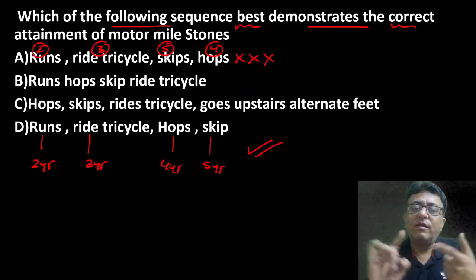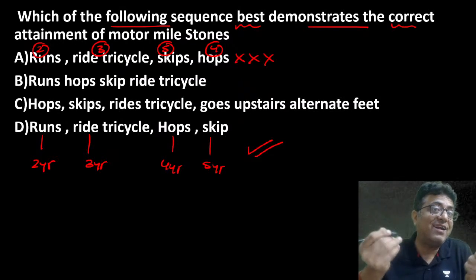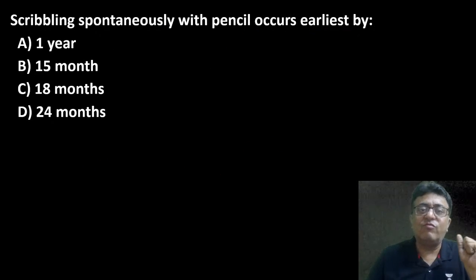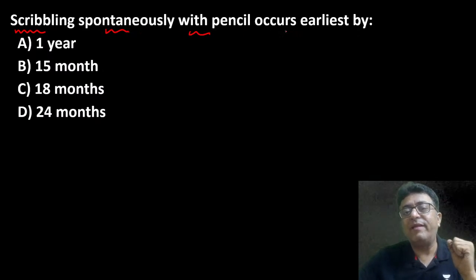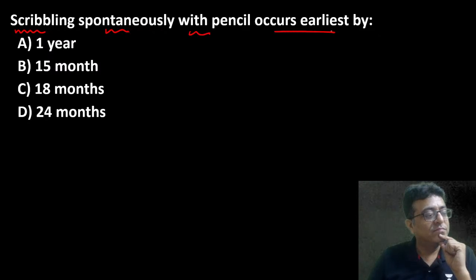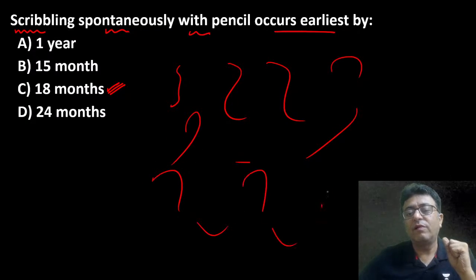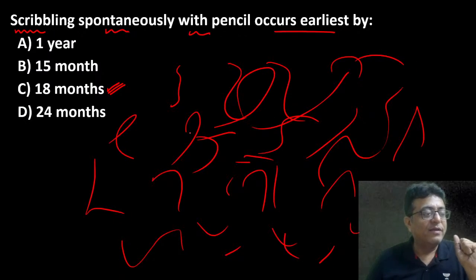How can you answer this? With your memory — you know what hopping means, what skipping means, how a child rides a tricycle, that child runs well at 2 years. This question was asked two times in previous exams. Scribbling spontaneously with pencil occurs earliest by 18 months of age. Scribbling — give pencil to child — child puts zigzag lines — 18 months.